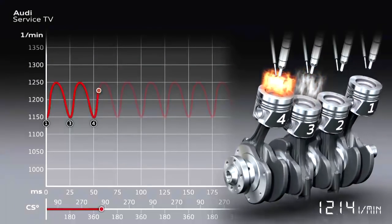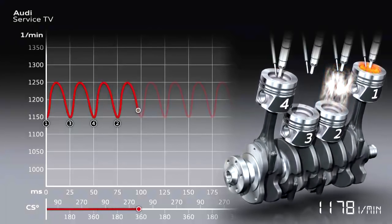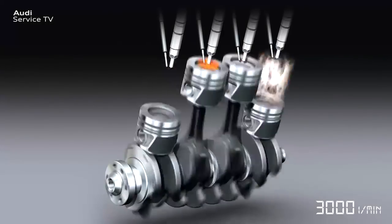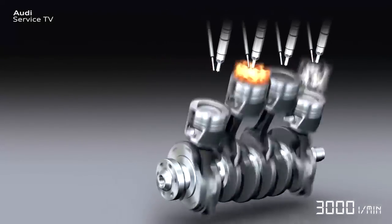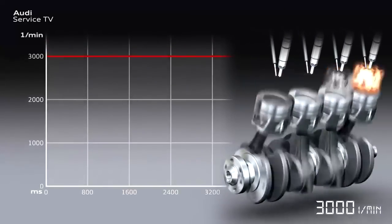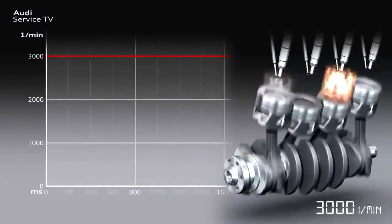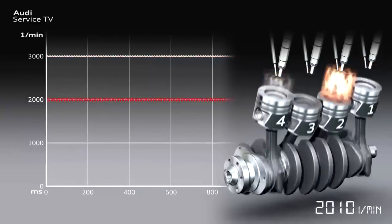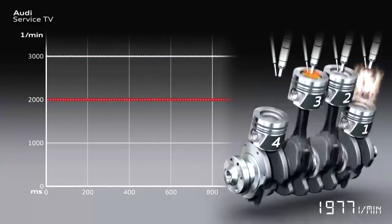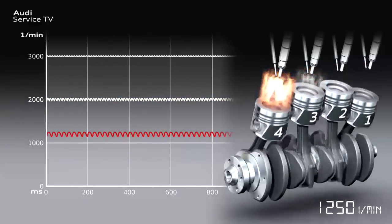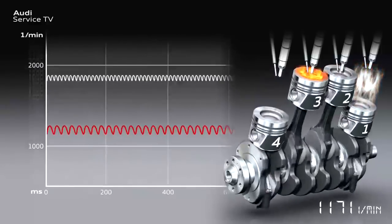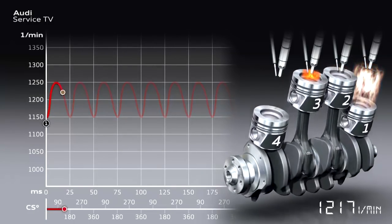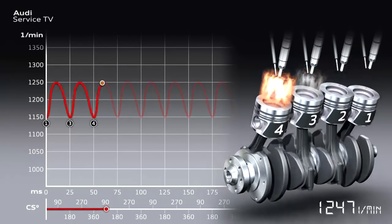A four-cylinder, four-cycle engine has a firing interval of 180 degrees. This means that two work cycles take place during one crankshaft revolution. For example, if the four-cylinder engine runs at 3,000 rpm, there are 6,000 ignitions per minute, which corresponds to 100 ignitions per second — and the engine rotational speed irregularities are therefore very slight. The lower the engine speed, the clearer the rotational speed irregularities appear as torsional vibrations. At 1,200 rpm, there are approximately 40 ignitions per second, meaning a work cycle only occurs every 25 milliseconds. The torsional vibrations are very marked in this engine speed range.